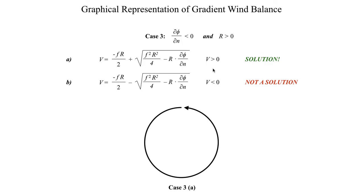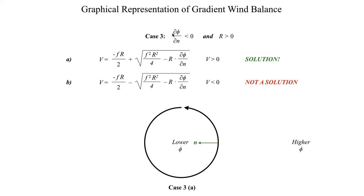Let's take a look at case three. In case three we have a positive radius of curvature, which again means a counterclockwise circulation. That means our n-hat direction — our normal axis — is again pointing towards the center. As we go in the direction of this n-hat, toward higher values of n, we are going towards lower values of phi, because this term is negative here.